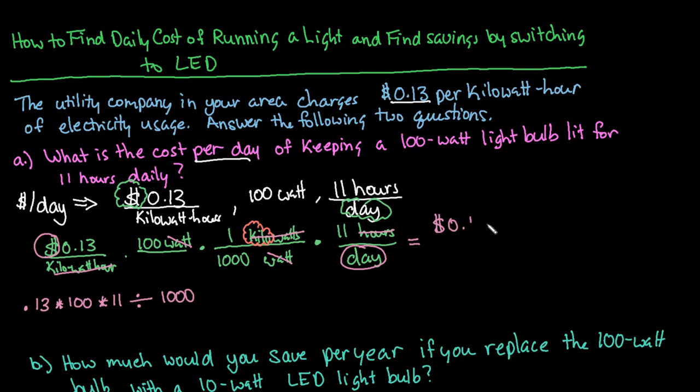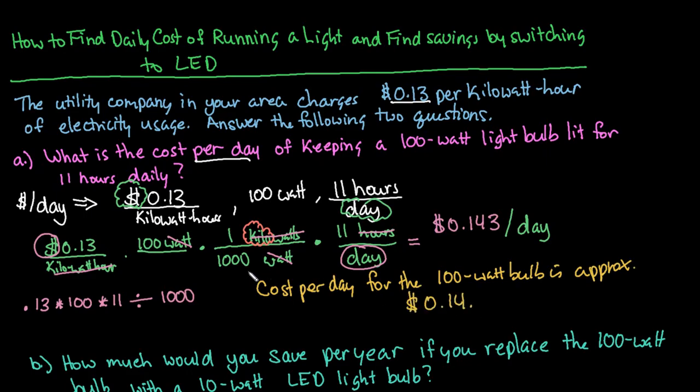So after you do that, when you plug it into your calculator, we get 0.143. And I know that we don't really charge in partial cents. But when they are calculating, they do use the partial cents. And then they round at the end. So for this one, this would be per day. So if we write this out, we could say that the cost per day for the 100-watt bulb is approximately $0.14. Just make sure that if you are doing this in an online homework platform that you round to whatever decimal place they tell you to. If they say to leave it as three decimal places, then you would just put it in as 0.143.